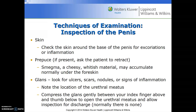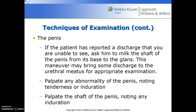When inspecting the glans, look for ulcers, scars, nodules, and signs of inflammation, and note the location of the urethral meatus, expecting it to be central. Compress the glans gently between your index finger above and thumb below to open the meatus and inspect for discharge — normally there is none, but you're also assessing for caliber and any stenosis. If the patient reported discharge and you're unable to see any, ask him to milk the shaft of the penis from base to glans; this may bring discharge to the meatus. GC and chlamydia testing is through urinalysis, so a urethral swab may not always be necessary, but at times it might be.